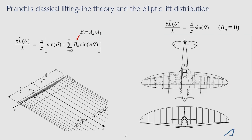From lifting line theory, the lift distribution can be written in a normalized form shown here on the top left, as a function of normalized Fourier coefficients b sub n. When we run through lifting line theory to predict the lift distribution on a wing, these normalized Fourier coefficients depend on the wing planform and the aerodynamic or geometric twist distribution, and that's what produces the lift distribution.